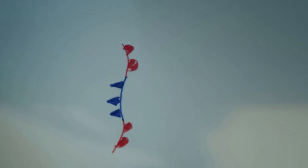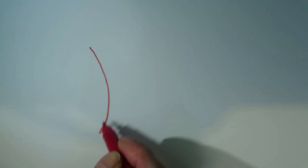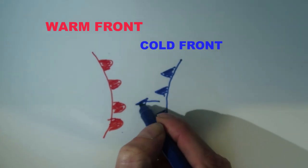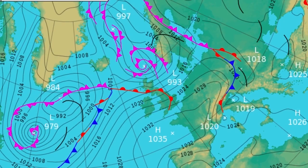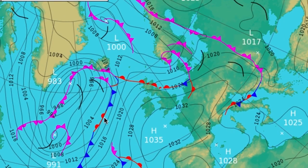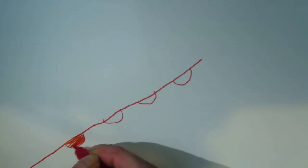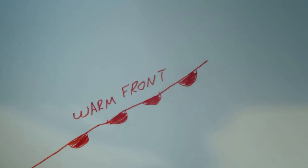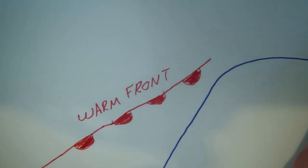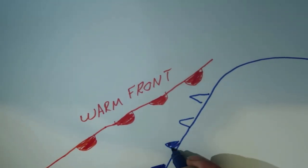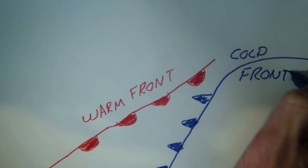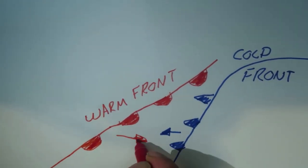A stationary front is where you've got a warm front and a cold front meeting and pushing against each other. It depends whether you've got high or low pressure as to what this front is going to bring, but there are going to be clouds and more than likely rain. It can bring snow, it can bring hail, and it can bring thunder and lightning.